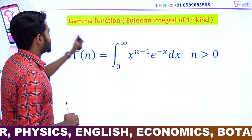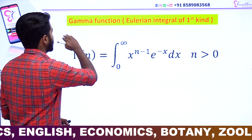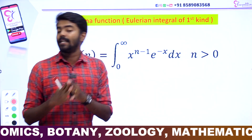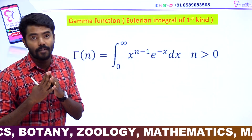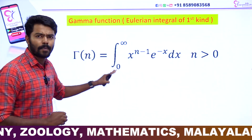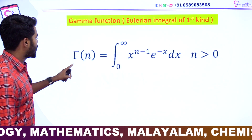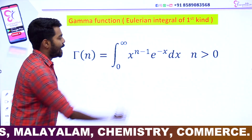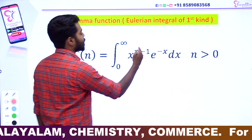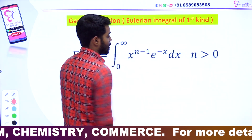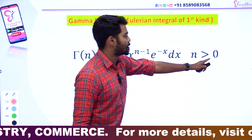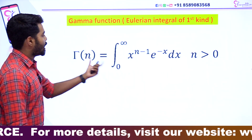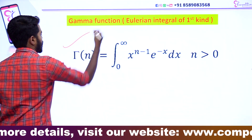The first function is the gamma function. We are going to use the first integral of the Euler area. We are going to use the gamma function. This is a very important equation. Gamma of n is equal to integral 0 to infinity, x raise to n minus 1 into e raise to minus x dx, where n greater than 0. We have a positive number.